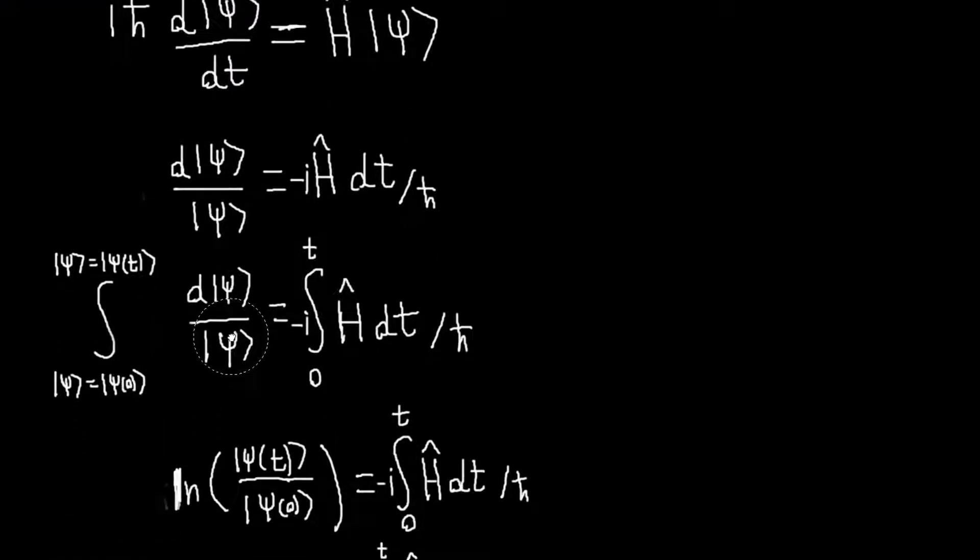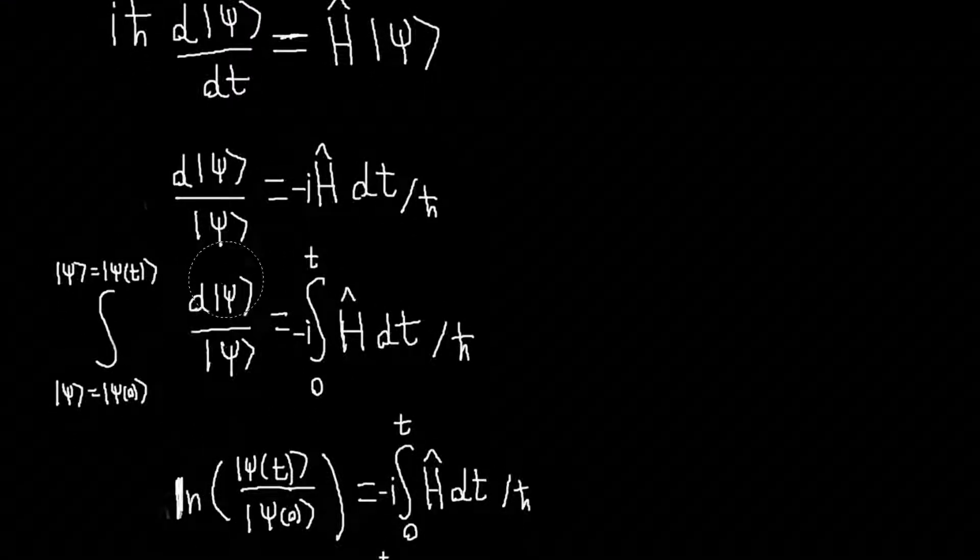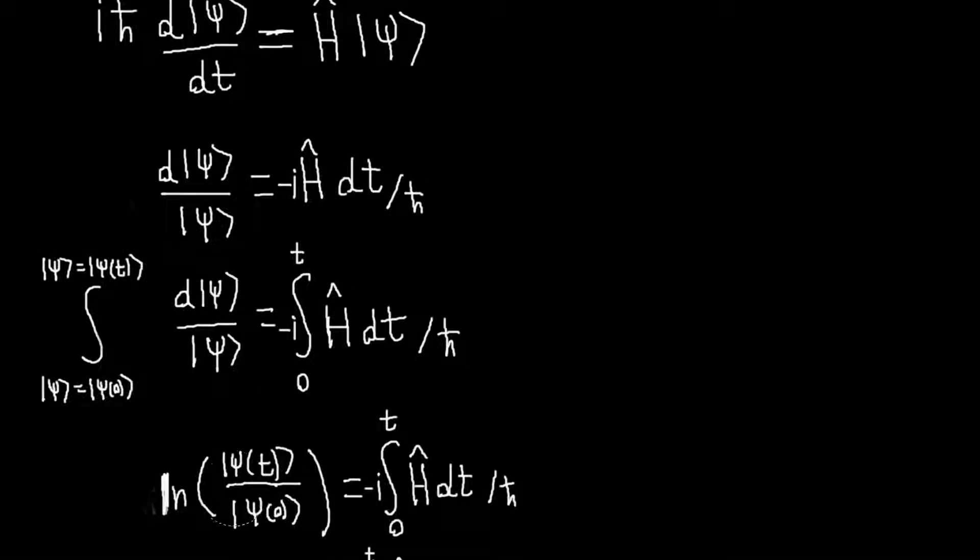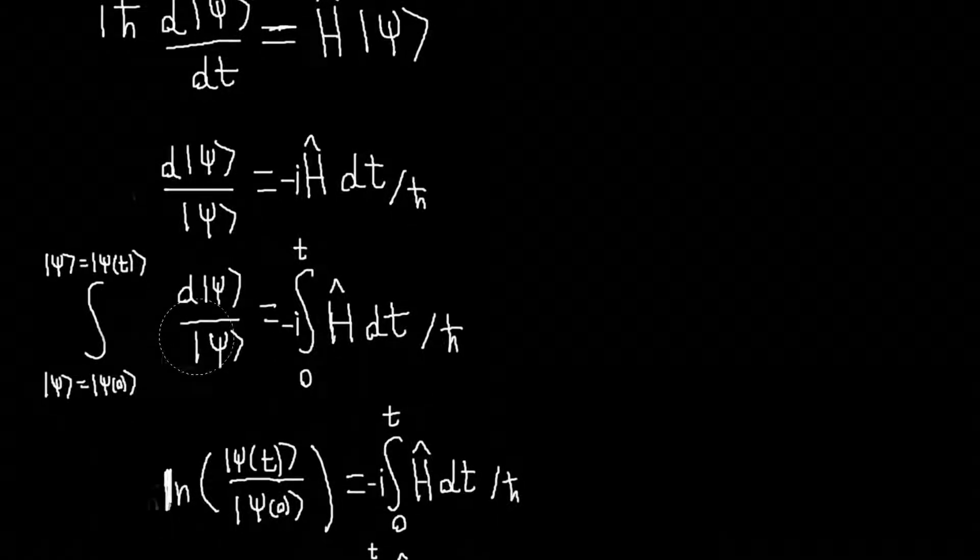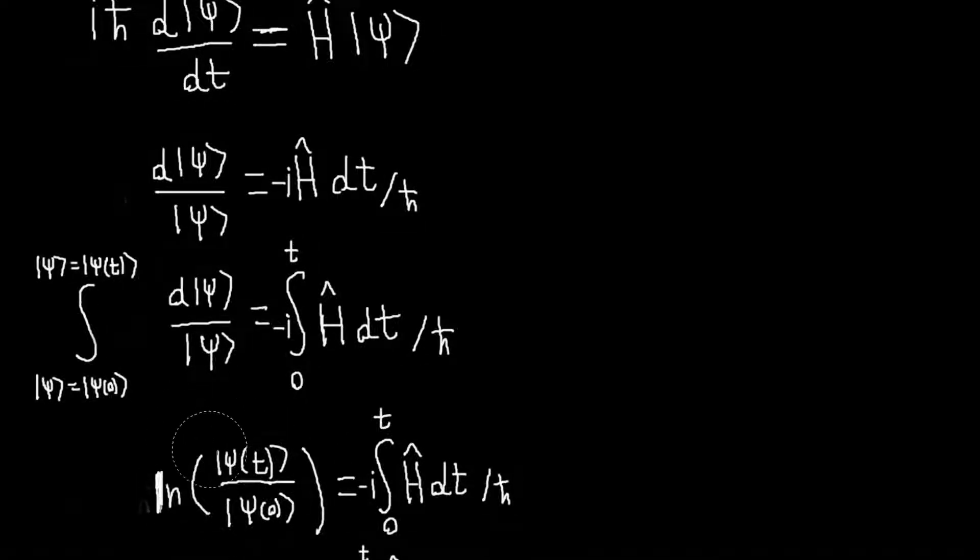And if I do that, then what I would get is the natural logarithm. This is d thing over thing. That's natural logarithm of this minus the natural logarithm of that, which is a property of natural logs. So it's natural log of psi of t over psi of 0.